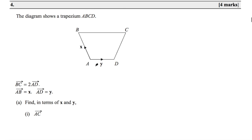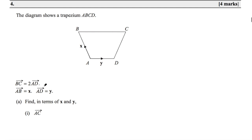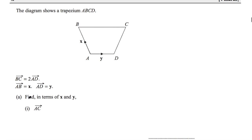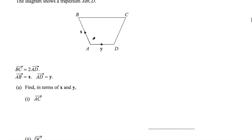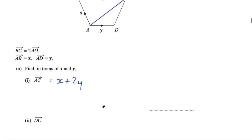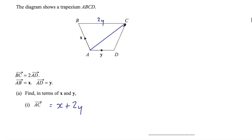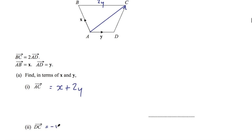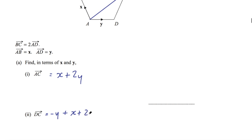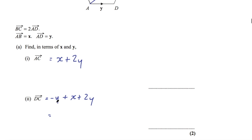Question 4 says the diagram shows trapezium ABCD. Vector BC equals 2AD, vector AB equals x, and vector AD equals y. Find in terms of x and y the vector AC. If BC equals 2AD, that means BC equals 2y. So AC is just going to be x plus 2y. Part 2 says find the vector DC. To get from D to C, we could go from D to A and then A to C. To get from D to A is −y, so DC is −y plus AC, which is x plus 2y. Simplifying: −y plus 2y is y, so DC is x plus y.